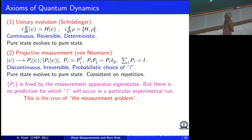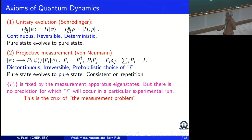The measurement still evolves pure states to pure states because the final result is an eigenstate of the measurement operator, and it is logically consistent on repetition: if I measure a particular observable on the system and immediately after measure the same observable again, I get the same answer. Once you reach an eigenstate you keep repeating and nothing changes. But there is no prediction for which i will occur in which experimental run, and this is the essence of the measurement problem.